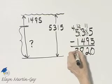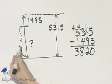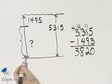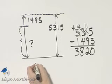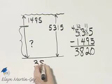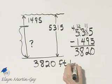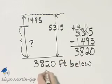4 minus 1 is 3. So this distance is 3,820 feet. It means that down here we're at an elevation of 3,820 feet and that is below sea level.